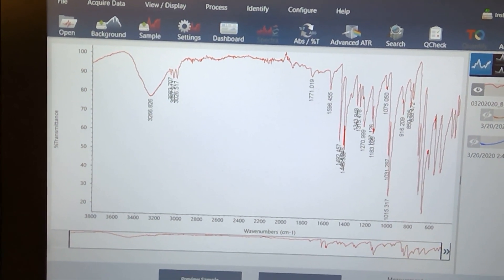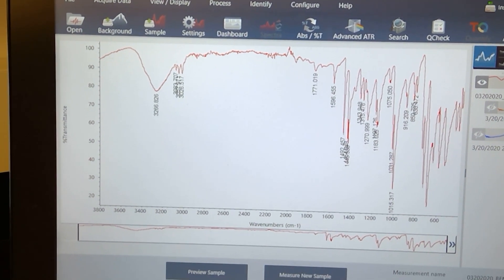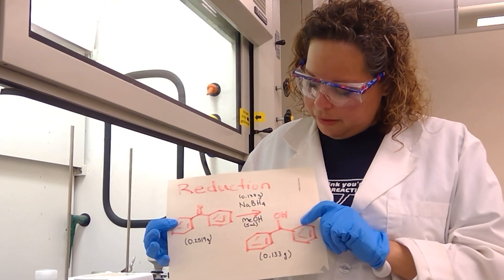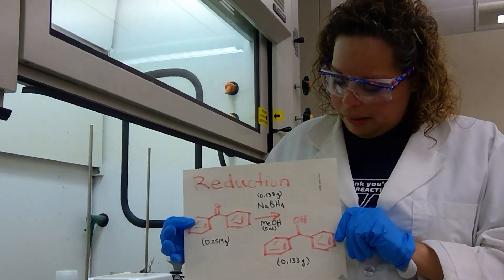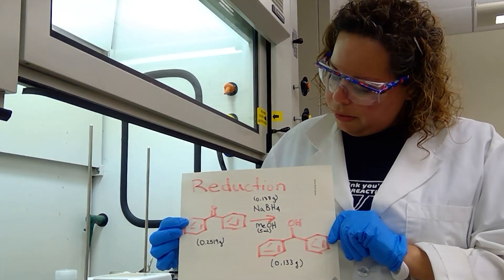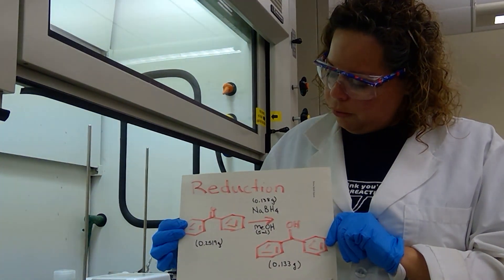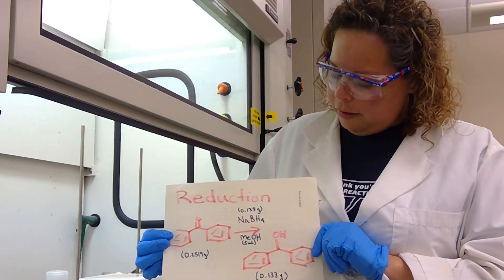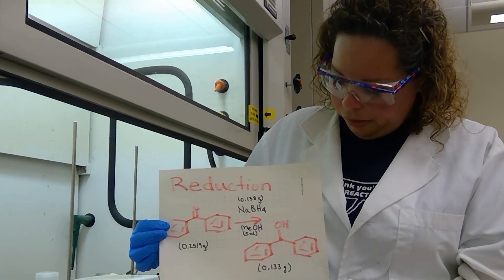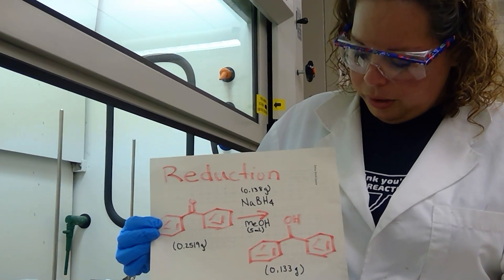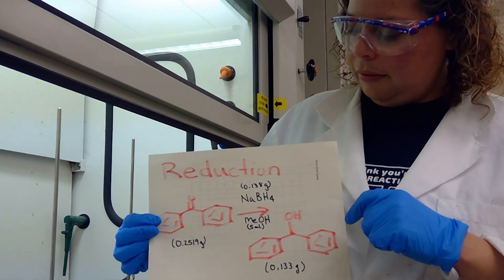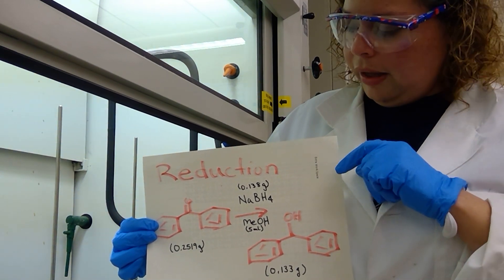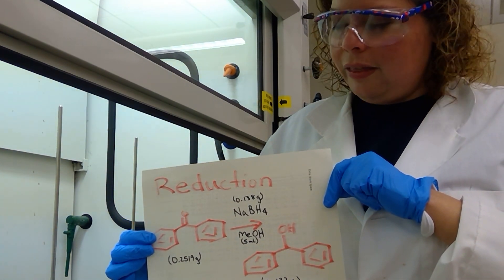Just to recap, this has been the reduction of benzophenone to create benzhydrol. Just to reiterate some masses, we started off with 0.2519 grams of benzophenone, we added 0.138 grams of sodium borohydride dissolved in five milliliters of methanol, and our product that we received back is 0.133 grams of benzhydrol. Without recrystallizing, we were able to isolate the product in a pretty good and pure yield. Thank you for watching, and we will see you next time with the oxidation reaction.